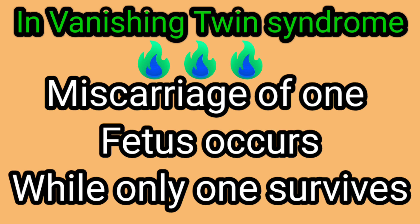What is vanishing twin syndrome? It is the miscarriage of one fetus that occurs while the other survives. In early twin pregnancy there are two fetuses, but as the pregnancy advances, one fetus vanishes while the other remains.